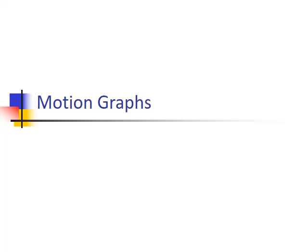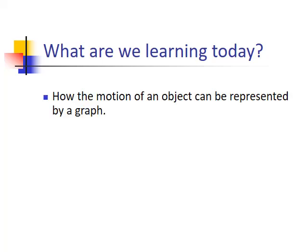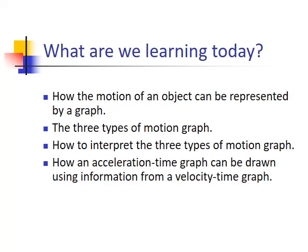Welcome to this Office Mix for Higher Physics on the unit on motion graphs. Today we're looking at how the motion of an object can be represented by a graph. We're looking at the three types of motion graph, how to interpret these graphs, what information we can get from them, and how to draw other graphs from a graph — for example, an acceleration time graph from a velocity time graph.